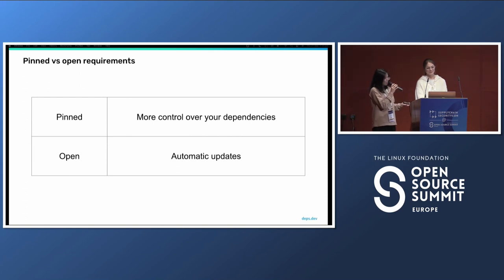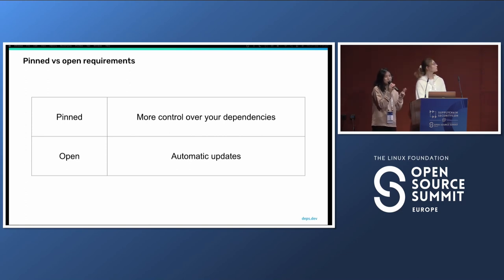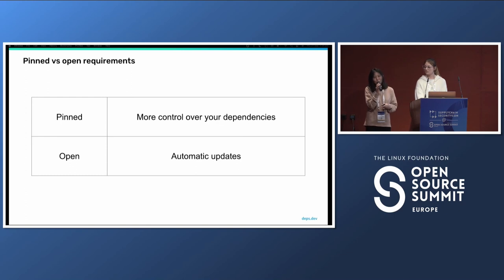Any solution you choose will have its pros and cons, so it's always a good idea to scan your graph continuously for issues, because it's big and it changes. It changes sometimes due to open requirements, but also because a version that's good today might not be good tomorrow. You might ship your product today having scanned for vulnerabilities and found none, only to have many vulnerabilities reported in the following weeks.